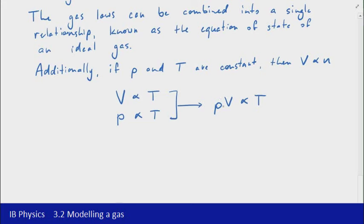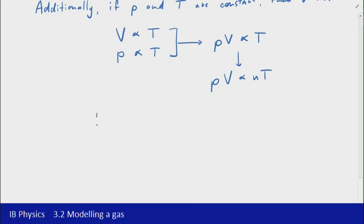We've also seen that volume is proportional to the number of moles of gas. So if all of these quantities are variable, we can expand that further and identify that PV is going to be proportional to the number of moles multiplied by temperature. We can turn that into an equation by adding a constant of proportionality.